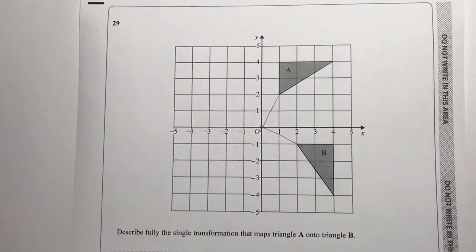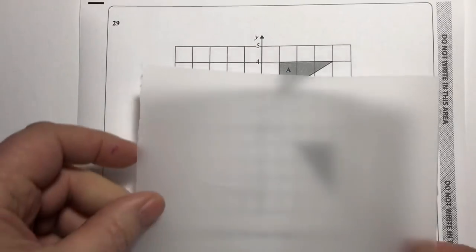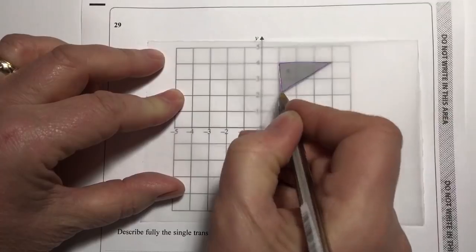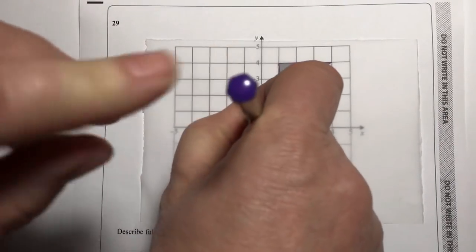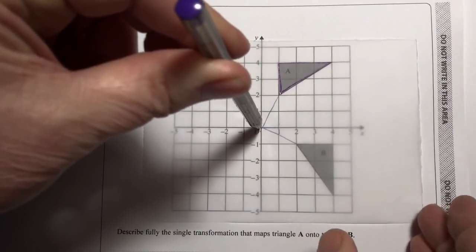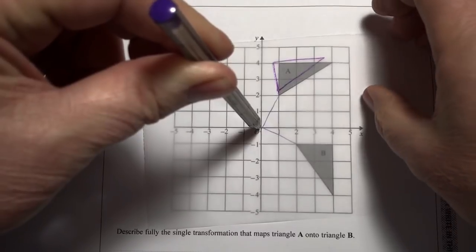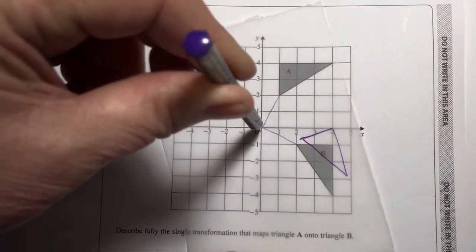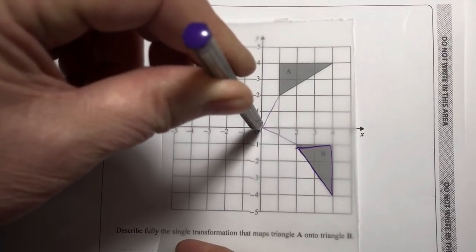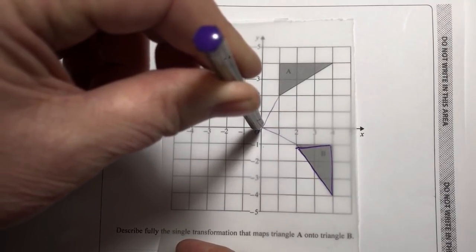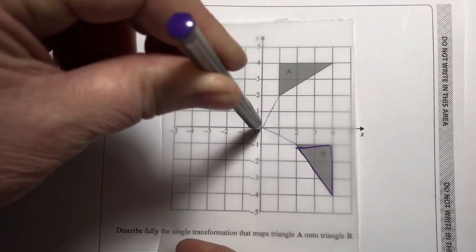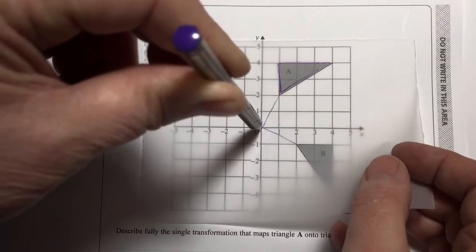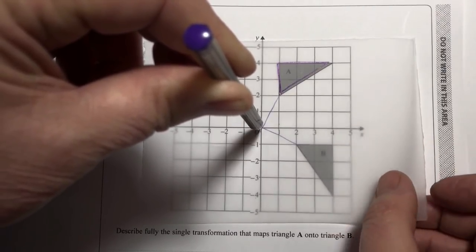Using tracing paper, I draw triangle A and then place my pen at a point and swivel the paper around. Moving it round, it just drops into place. It isn't a great video demonstration, but hopefully you'll be able to experiment with this at home. You'll see that it is a 90-degree rotation around the origin point, zero zero.